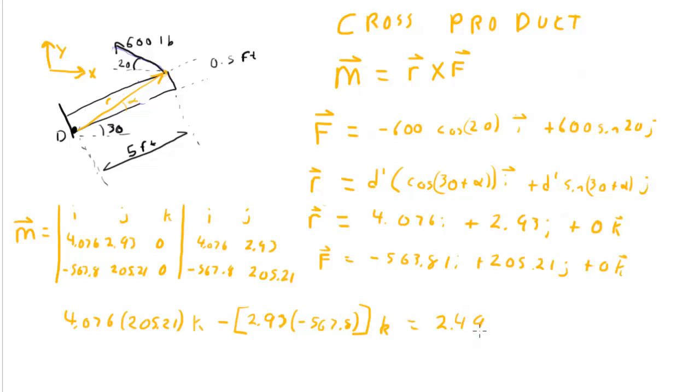2.49. Why is that? R, magnitude of R is measured in feet. F, the magnitudes of F are measured in pounds. So I would get 2,490 pound feet here, which I'm going to write as 2.49 kip feet, but in the k direction.